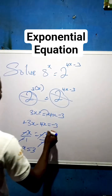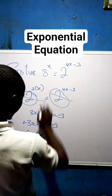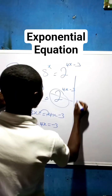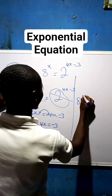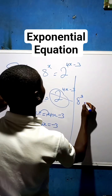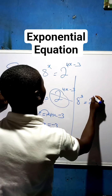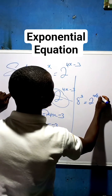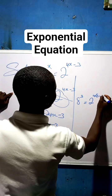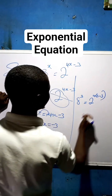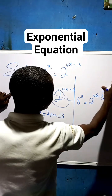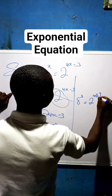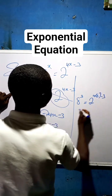To check whether we are correct, wherever we see x we substitute 3. So we have 8 to the power of 3 equal to 2 to the power of 4 times 3 minus 3.